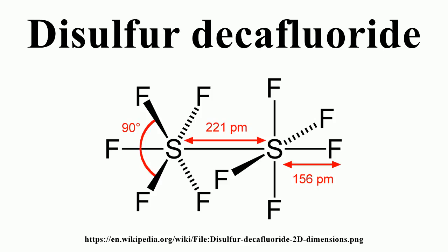Disulfur decafluoride is produced primarily by the decomposition of sulfur hexafluoride: 2 SF6 → S2F10 + F2. This compound contains sulfur in the plus-five oxidation state. At temperatures above 150 degrees Celsius, S2F10 decomposes slowly to SF6 and SF4.